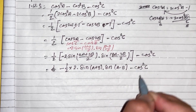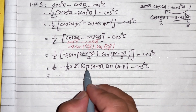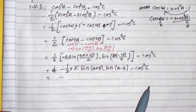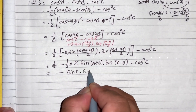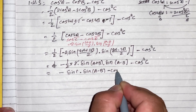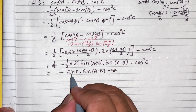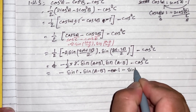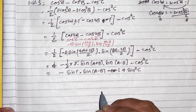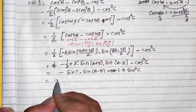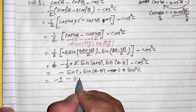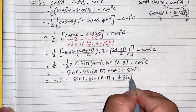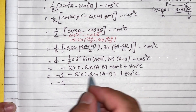After substituting sin(a+b) equals sin c, the expression becomes: minus sin c times sin(a minus b) minus cos square c. Using 1 minus sin square c equals cos square c, this simplifies to minus 1 plus sin square c minus sin c sin(a minus b) plus 1 minus sin square c.